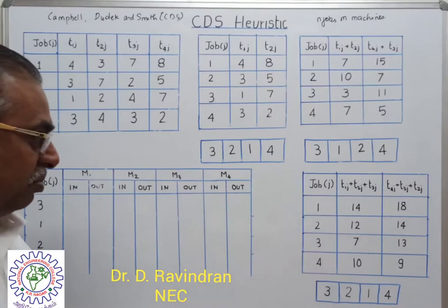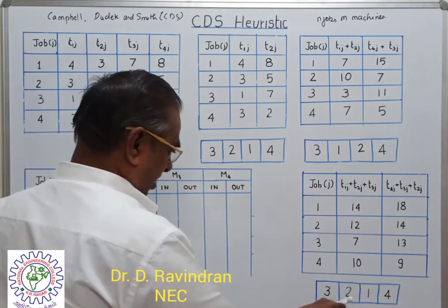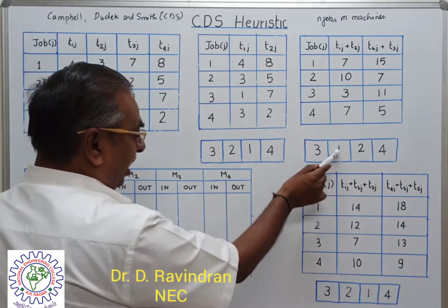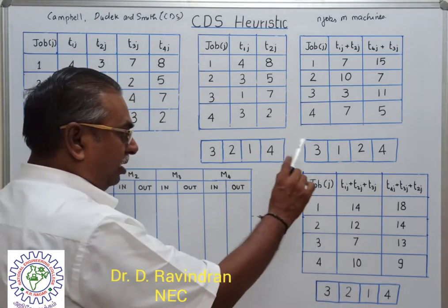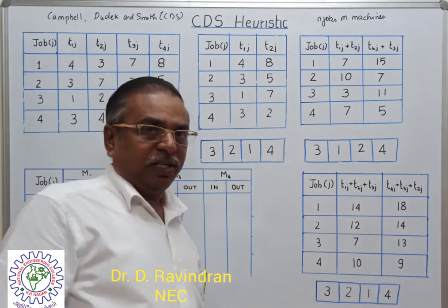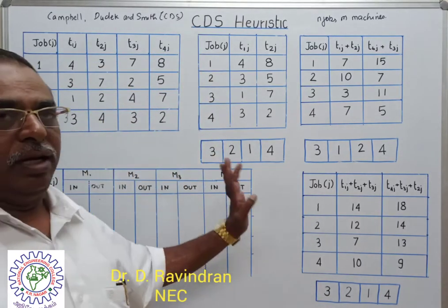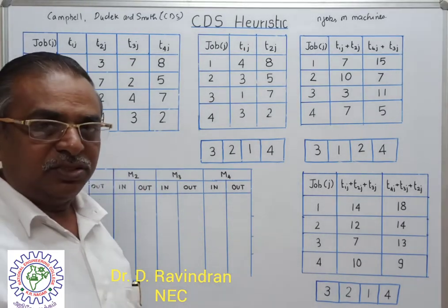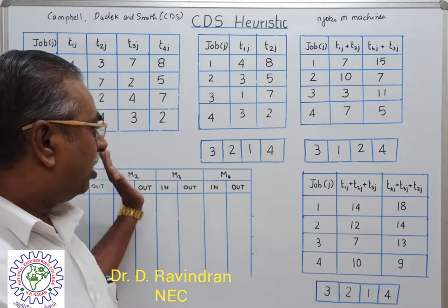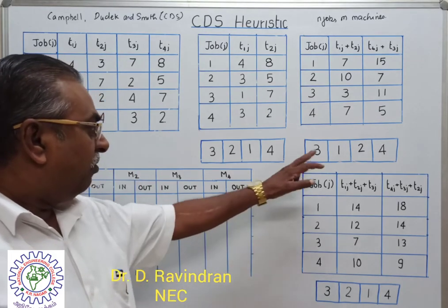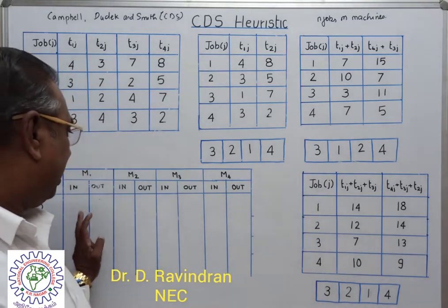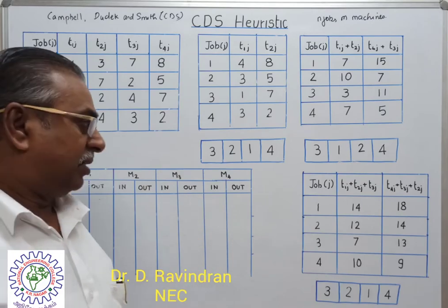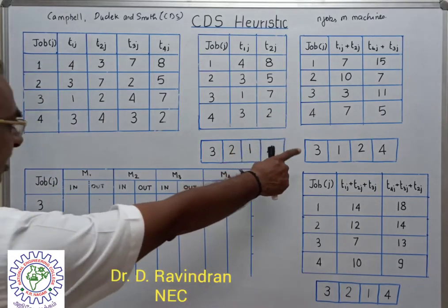We will have different sequences from these steps. In this case, two sequences are found to be similar and one sequence is different. For all the sequences, we find the makespan by scheduling based on previous methods, finding the maximum span time for all four machines. Let us consider the sequence 3, 1, 2, 4 and evaluate its makespan.